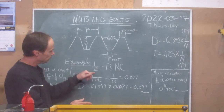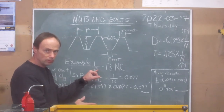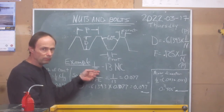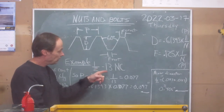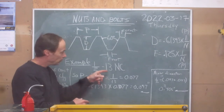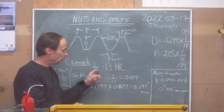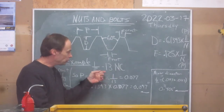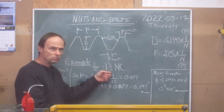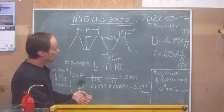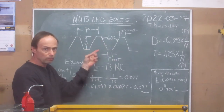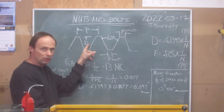Here's an example of thread nomenclature — how you would ask for a certain thread and diameter. In this case it's imperial, not metric. You have a half-inch bolt and 13 threads per inch, which makes this a national coarse thread. For national fine you might see 18 or 20 threads per inch instead. The threads have flat tops and bottoms on the crest and root.